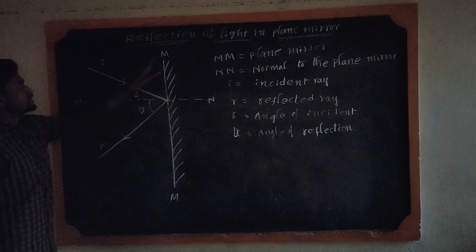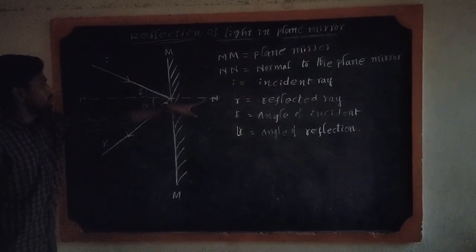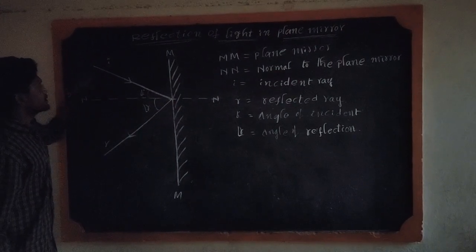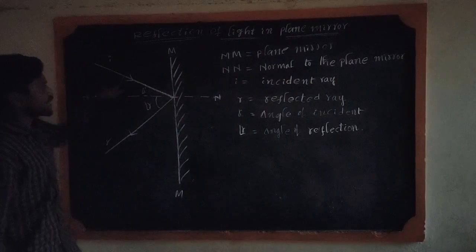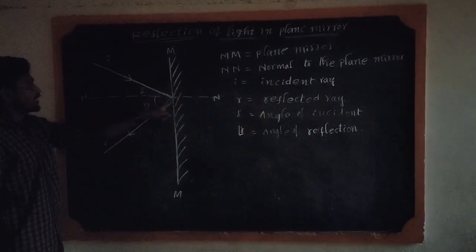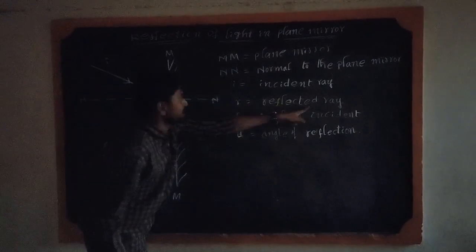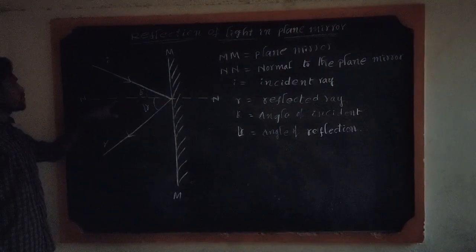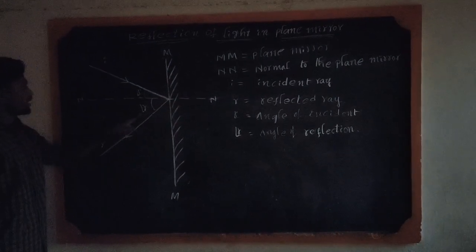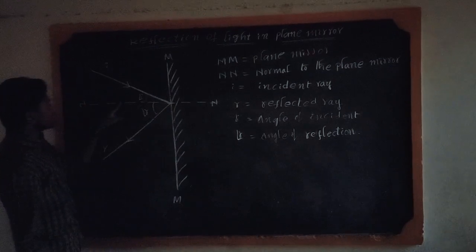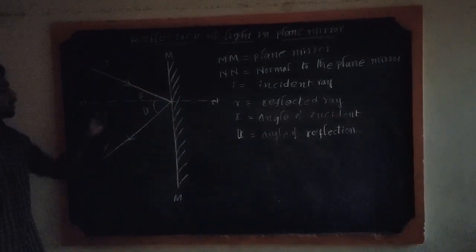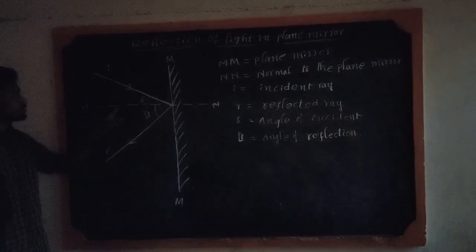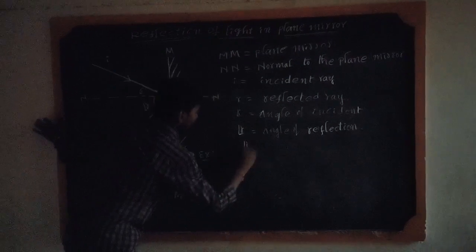Friends, again I will summarize: M-M means plane mirror, N-N means normal to the plane mirror, I-M means incident ray — the ray that moves towards the plane mirror is called the incident ray. The ray that bounces from the mirror is called the reflected ray. The angle between the normal and the incident ray is the angle of incidence. The angle between the normal and the reflected ray is the angle of reflection. So, angle of incidence is equal to angle of reflection — that is, angle I equals angle R.